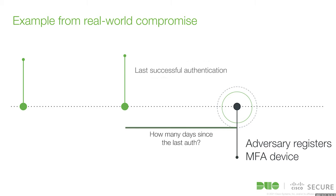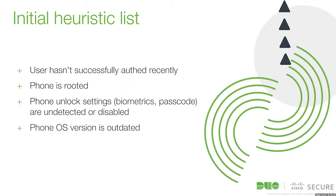We decided to look at how long it had been since the last successful authentication before this registration attempt. You're probably thinking there are a lot of different ways that could come up in benign situations. But since we don't have visibility into the internals of that user's Active Directory — we just know the account is active — we need to use some of these other heuristics. In combination with that, we also looked at the security state of the roaming authenticator, especially phones and tablets. Some companies do not want to enforce those checks — it's increased friction, and universities have less control over device properties — but those are still a real risk, even if allowed by policy.